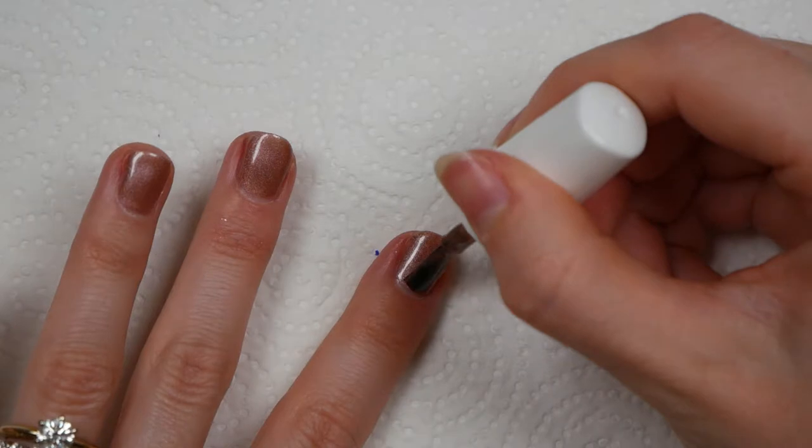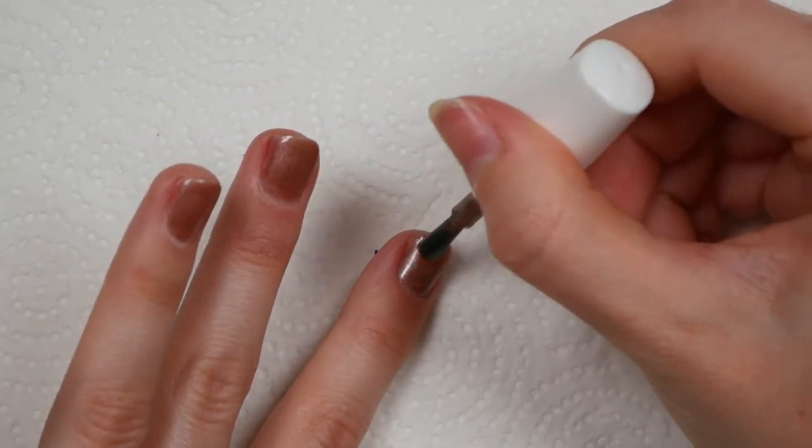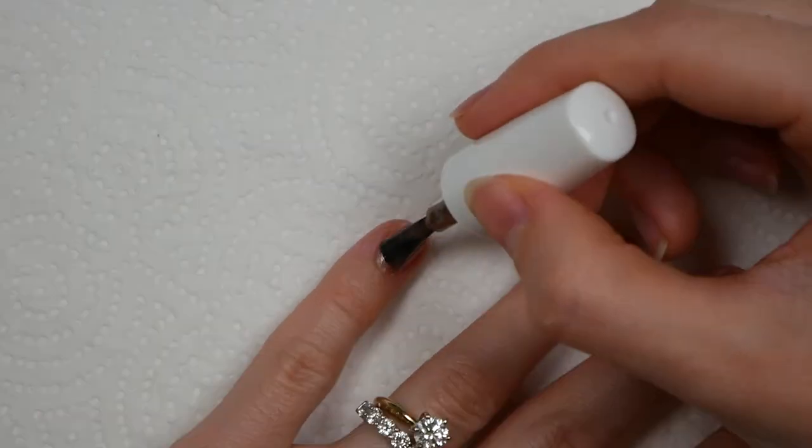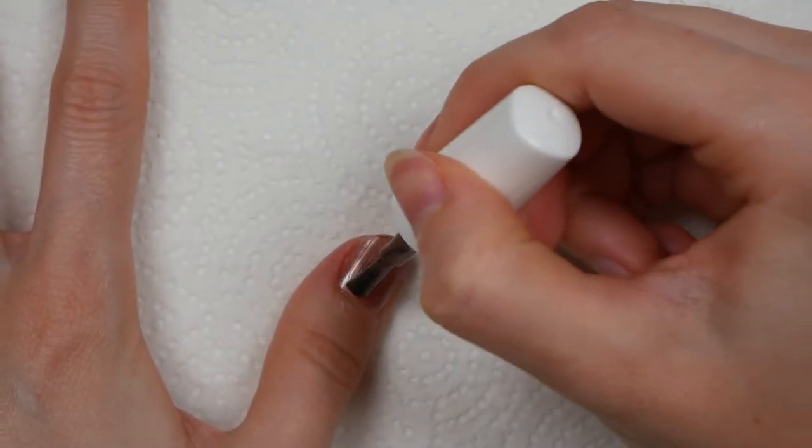In my opinion, Gelish makes some of the best gel polishes because they're pretty thick, so they hardly ever run into your cuticles or the sides. And I just love this color because it's a little bit shimmery, but doesn't have huge chunks of glitter.